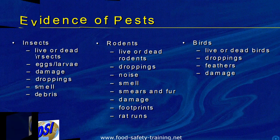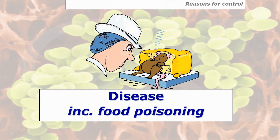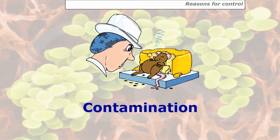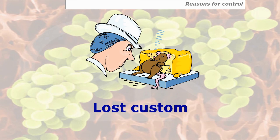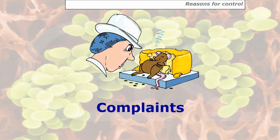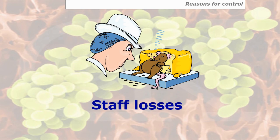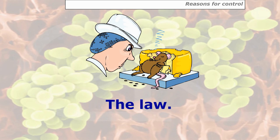Why do we need to control pests? They cause disease including food poisoning and contamination — anything contaminated must be thrown out, causing wastage. They cause damage to buildings, pipes and electrical systems; rats for example can bite through solid concrete, pipework causing floods, and electrical cables. You'll lose custom if you're known for having a pest infestation, and lose staff as business declines. And it is the law — you must not have pests on the premises and must take every precaution necessary to prevent pest infestation.